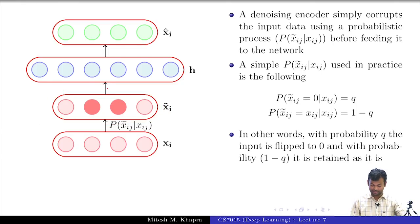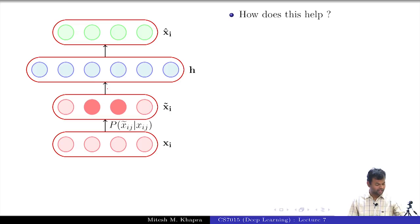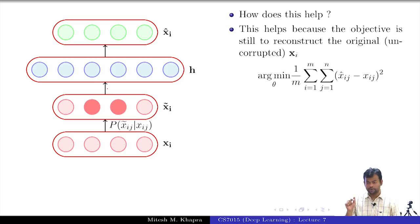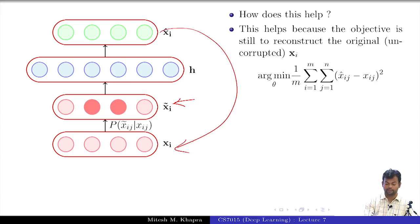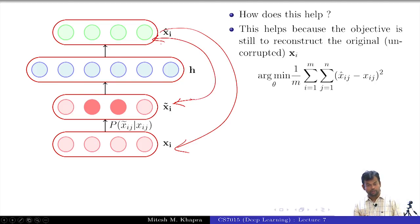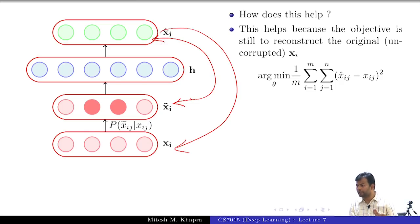This helps because I am still minimizing the original objective function. Now, can the network get away by copying the input to the output? The input to the network is the corrupted x-tilde_i, but what I am minimizing is the difference from the original x_i. If I just copy x-tilde_i to the output, my objective function will not be minimized. So it does not have the incentive to copy. With, say, 20 percent corruption, even if I reconstruct the corrupted input, I will still get at least 20 percent error.